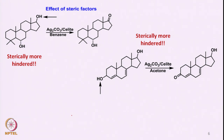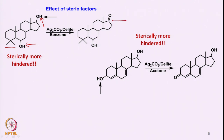There are steric factors that affect this reaction. For example, in a steroid molecule with two secondary hydroxy groups, one hydroxy group is close to a geminal dimethyl group and is within the ring, making it sterically more hindered. There is therefore preferential oxidation of the less hindered hydroxy group, leading to ketone formation at that position.